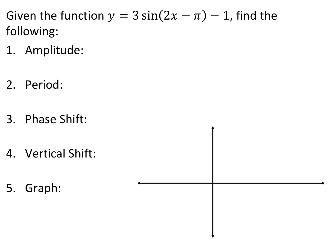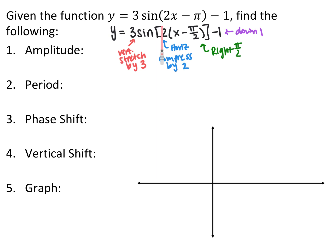Given the function y = 3sin(2x - π) - 1, we want to find the amplitude, period, phase shift, vertical shift, and then graph it. First, we factor out whatever is being multiplied by x. Factoring out the 2, we get x - π/2. This gives us a vertical stretch by 3, horizontal compression by 2, shift right π/2, and down 1.